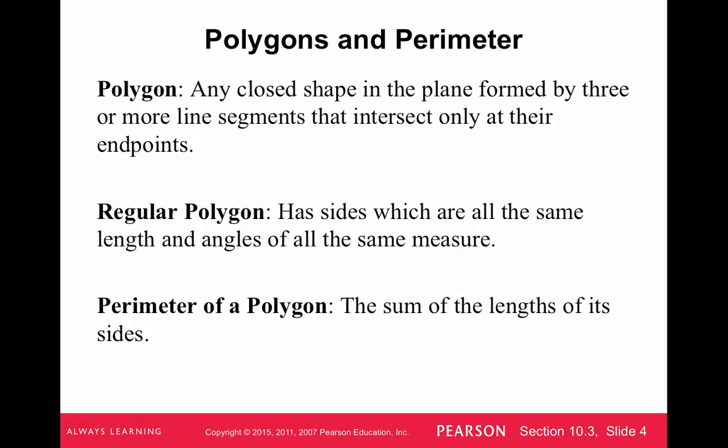So the name polygon is just a closed shape in the plane formed by three or more line segments. So the first kind of polygon is a triangle. The next kind is a quadrilateral, meaning four sides, like a square or a rectangle. A regular polygon has sides which are all the same length and angles of all the same measure. That's not a super important thing for us.